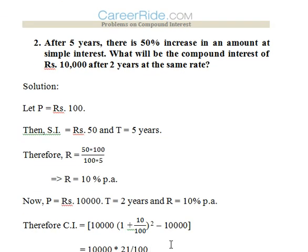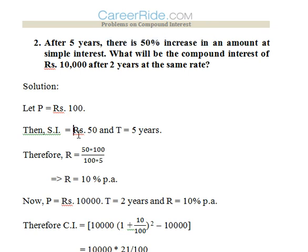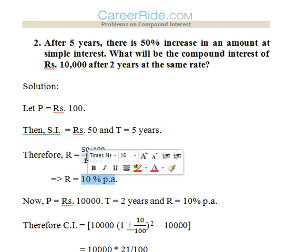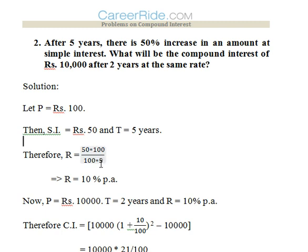Second question: After 5 years, there is a 50% increase in an amount at simple interest. What will be the compound interest on Rs. 10,000 after 2 years at the same rate? We don't know the principal, so we assume it to be 100. Since there is a 50% increase, SI equals 50. Time given is 5 years, so we calculate R = (50 × 100) / (100 × 5) = 10%.